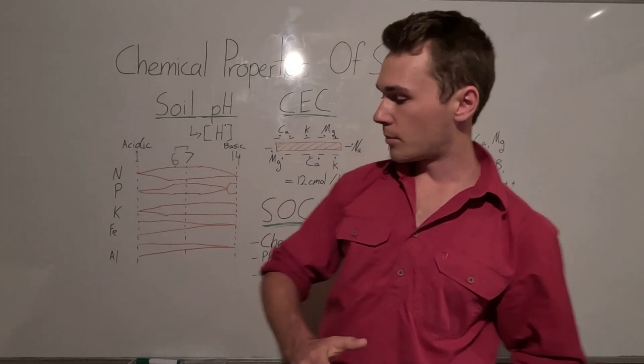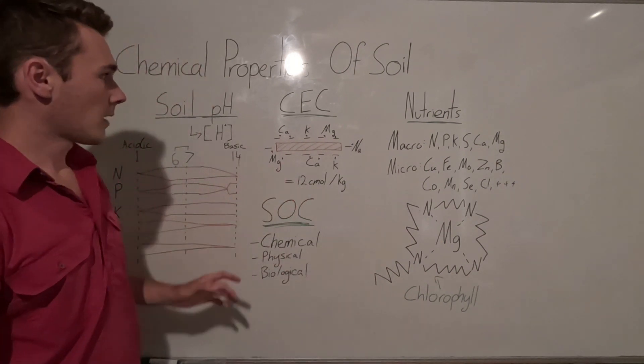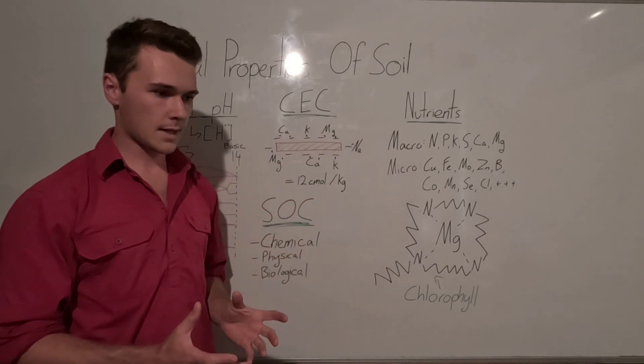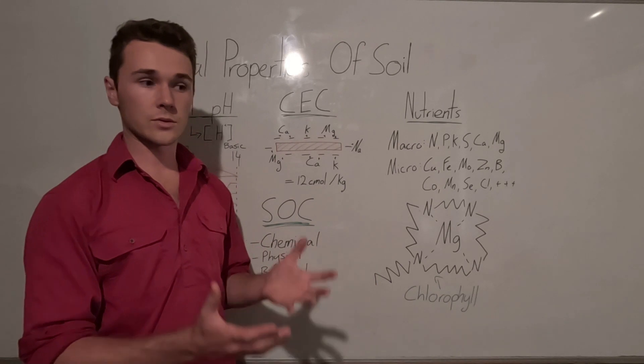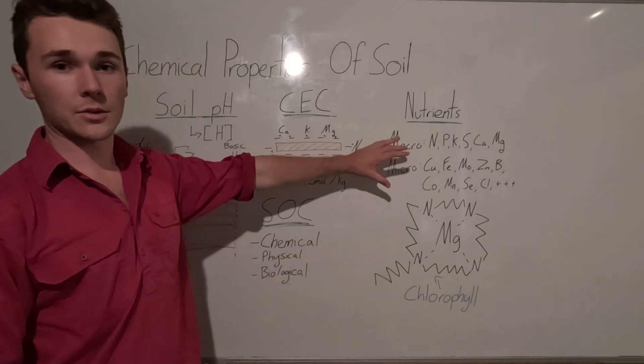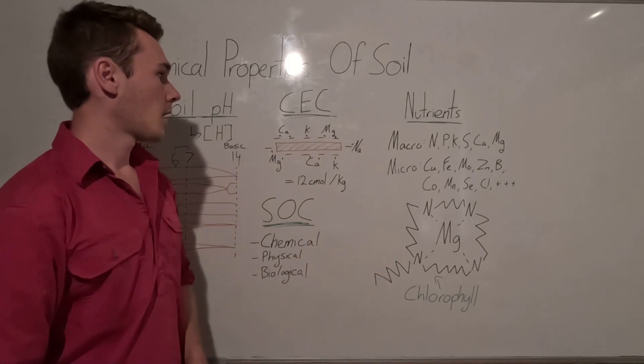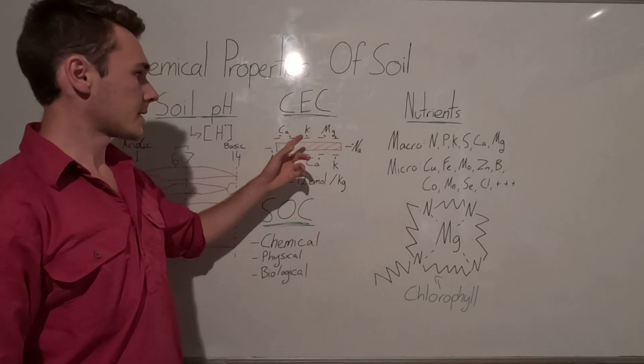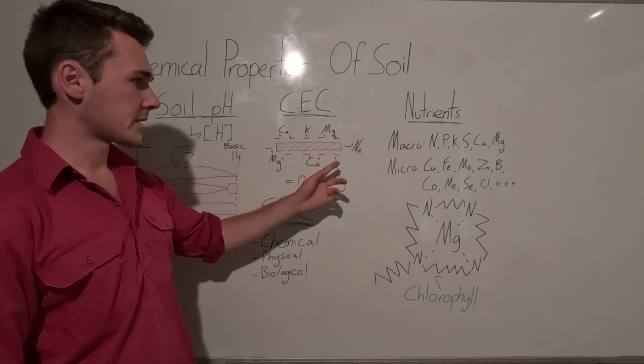Another chemical property of our soil is our cation exchange capacity. You've got to think of this as almost like a bucket for our soils to hold on to cations. Now cations are nutrients in our soil that have a positive charge. So calcium, potassium, magnesium, sodium to some extent.